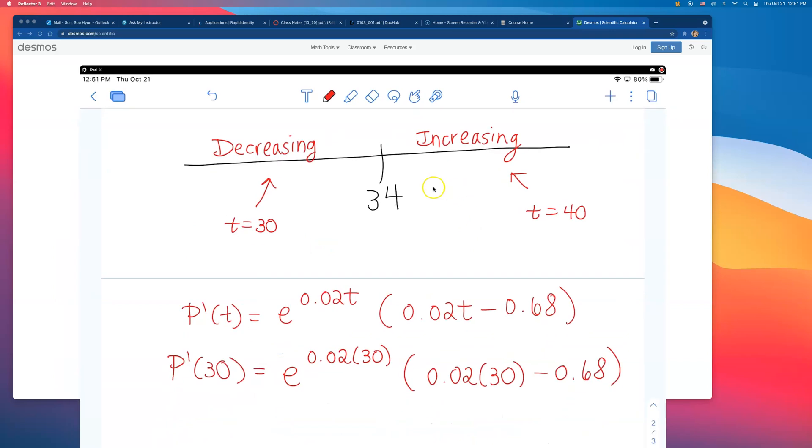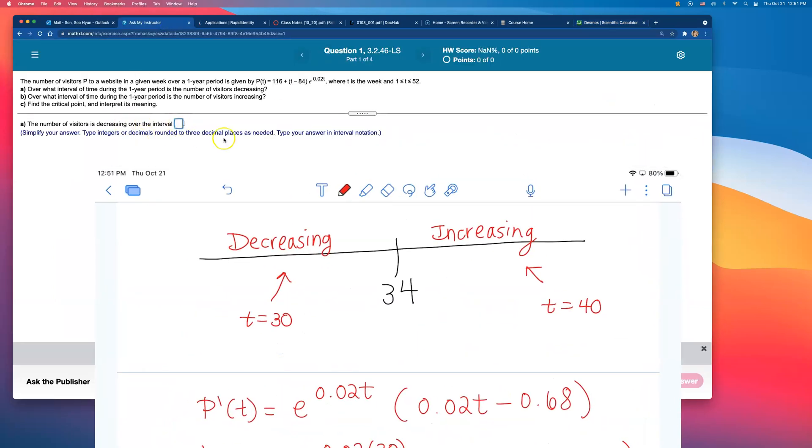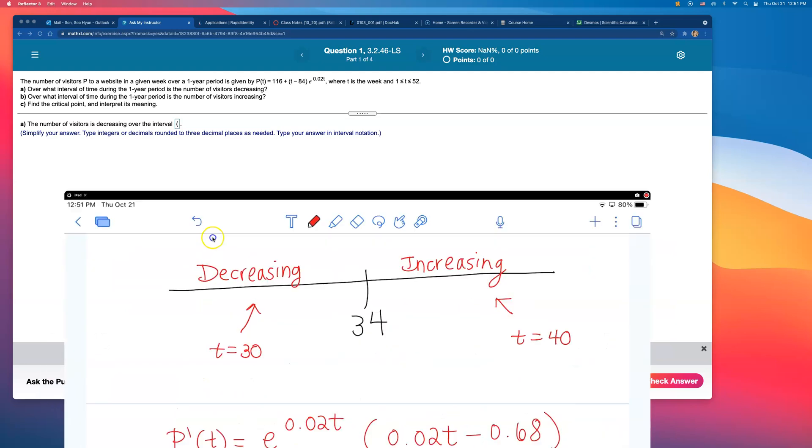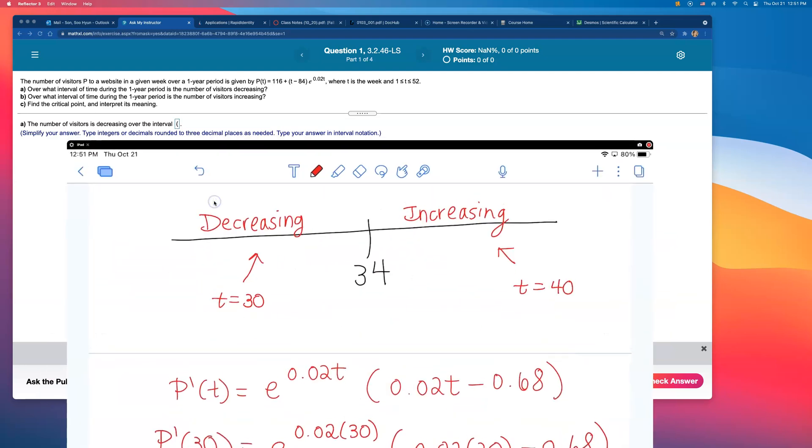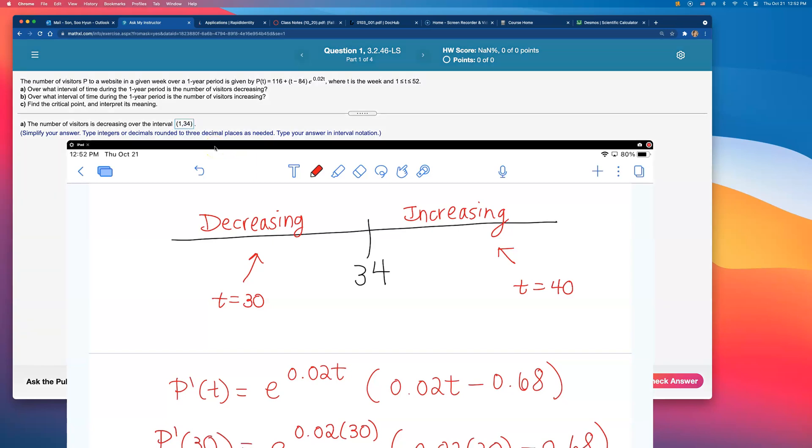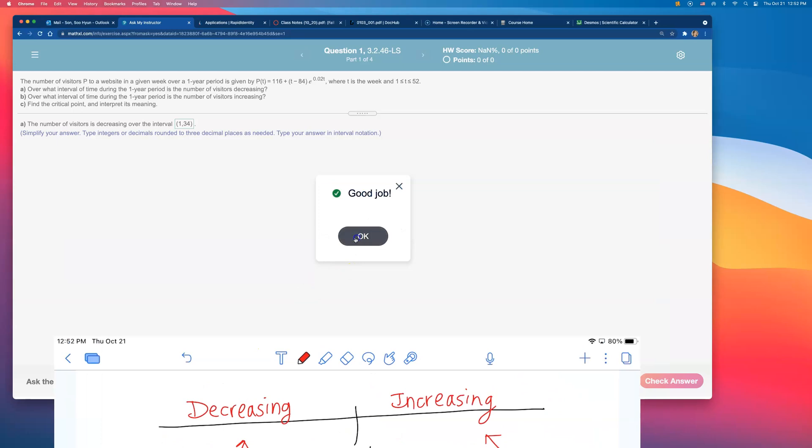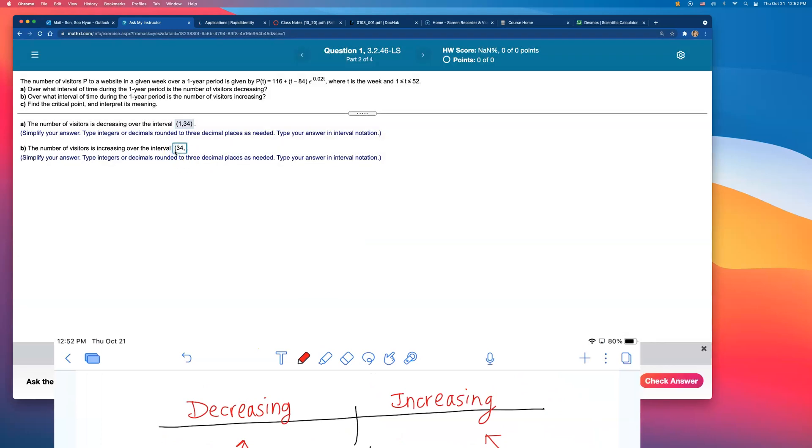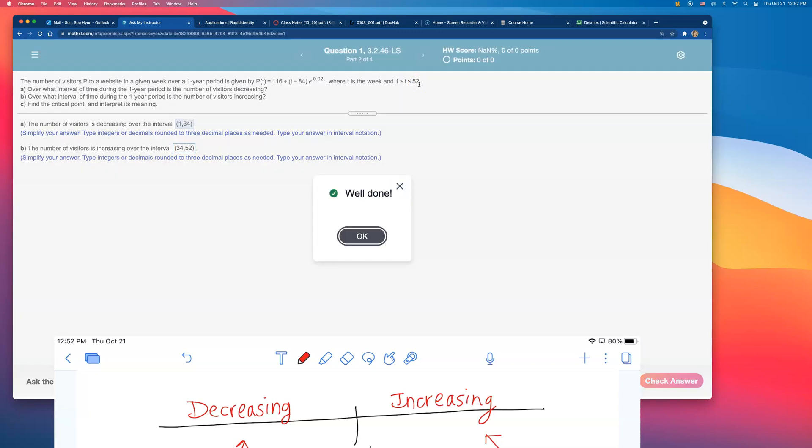So let's answer the question here. I'll say the number of visitors is decreasing over the interval from one to, because we're talking about number of weeks, so we're not going to say negative infinity. We're not talking about negative infinity weeks. So I'll say from week one to 34, it is decreasing, and from 34 on to 52, because 52 is the maximum, right? So 34 to 52, it is increasing.